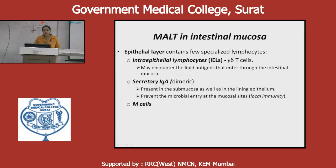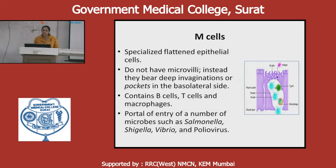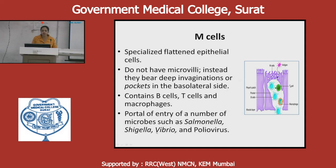Secretory IgA is dimeric in structure, present in the submucosa as well as in the lining epithelium, and prevents microbial entry at the mucosal site, giving local immunity. M cells are specialized flattened epithelial cells without microvilli that instead bear deep invaginations or pockets in the basolateral site containing B cells, T cells, and macrophages. The portal of entry for a number of microbes such as Salmonella, Shigella, Vibrio, and polioviruses is through these M cells.